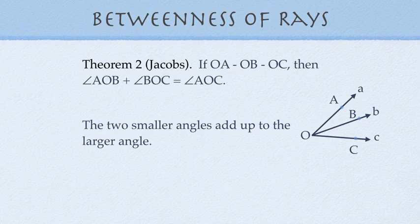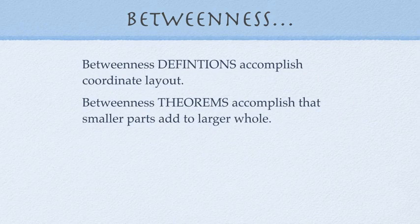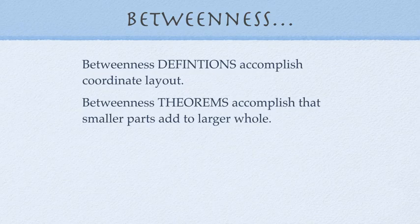Theorem two looks very much like the betweenness of points theorem. The theorem, and remember the definitions just say that you have things in order, and the theorems say that if you have betweenness, then you can add the parts up to make the whole. So, if you have betweenness of rays, then the two angles add up to make the big angle. The two smaller angles add up to make the larger angle. Now, one more time, betweenness definitions accomplish coordinate layout. The words go from large to small or small to large. The betweenness theorems accomplish that the smaller parts add up to the larger whole. As you're writing your proofs, make sure that you distinguish between what you need, and if you just need to say that this one's greater than that one, then you're probably going to use the definition. If you're going to say that the two parts add up to the whole, or these two pieces add up to that, then your reason might be a betweenness theorem.